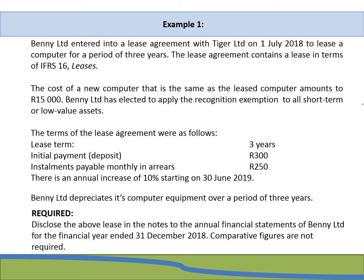Let's work through an example. Benny Limited entered into a lease agreement with Tiger Limited on 1 July 2018 to lease a computer for a period of three years. The lease contains a lease in terms of IFRS 16. The cost of a new equivalent computer amounts to 15,000 Rand. Benny Limited has elected to apply the recognition exemption to all short-term or low-value assets. The lease term is three years, with an initial deposit of 300 Rand, monthly installments in arrears of 250 Rand, an annual increase of 10% starting 30 June 2019, and computer equipment depreciated over three years.